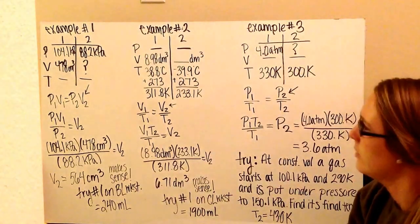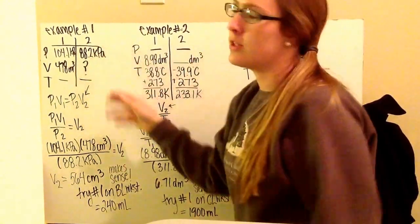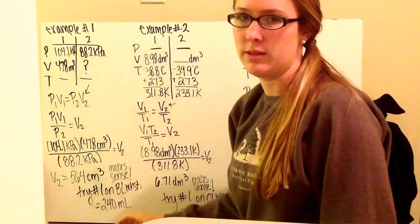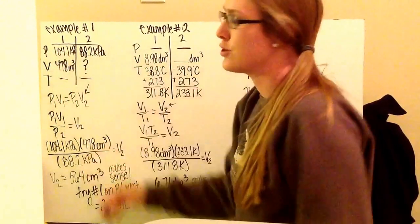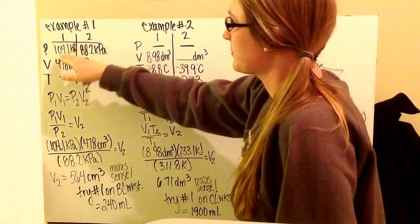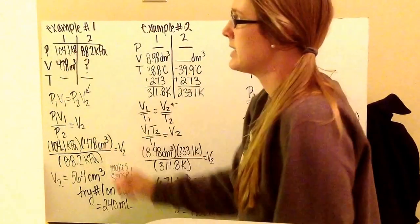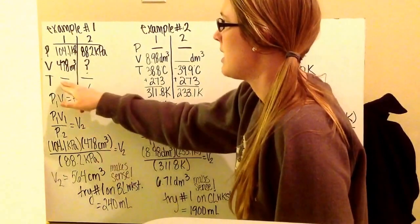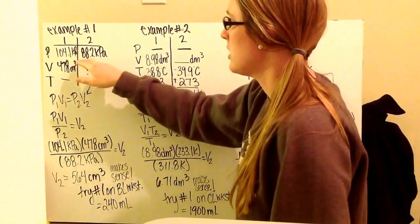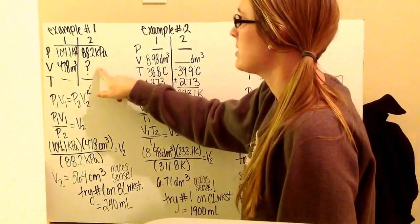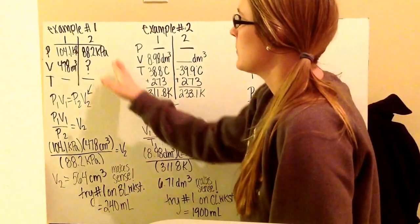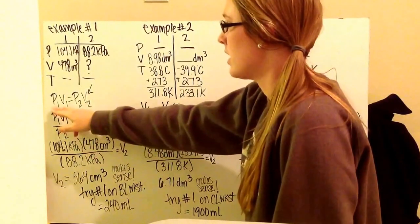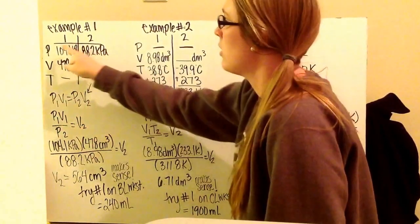Now a couple of examples. I like to make T-charts for these, just like we did for specific heat problems. The left side is initial information, the right side is final information. For example one: initial pressure is 104.1 kilopascals, initial volume is 478 centimeters cubed, and temperature stays constant. My pressure decreases to 88.2 kPa, and I want to find my final volume. Since pressure and volume are changing but temperature is constant, this is a Boyle's Law problem — P1V1 = P2V2.